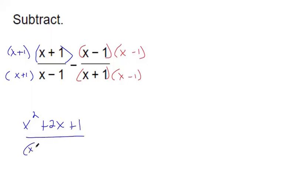And then this is x plus 1, x minus 1. Over here, x minus 1 times x minus 1, that's going to give you x squared minus 2x plus 1 over the same thing. I'm just going to put quotes because we've got common denominators.